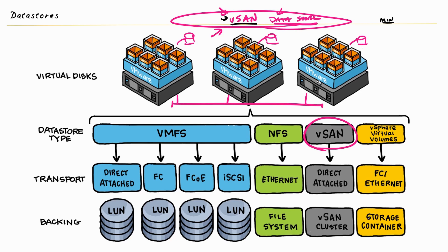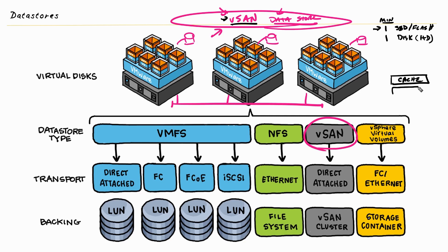Now for the actual disks involved, each ESXi host needs to have at least one SSD or flash drive — a solid state drive — that they can contribute into the vSAN. And then they also need to have at least one additional disk, which can be either a normal hard disk or another solid state drive or flash drive. At least one of the contributing disks needs to be an SSD or flash drive. The reason for that is vSAN uses the faster SSD disk for caching, and then needs at least one or more additional disks — where the more traditional hard disk drive can come into play — for the actual storage. So the SSD or flash drive is used for the caching function, and the other one is used for the actual storage of files.